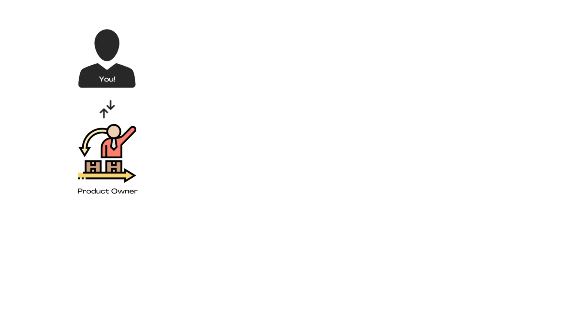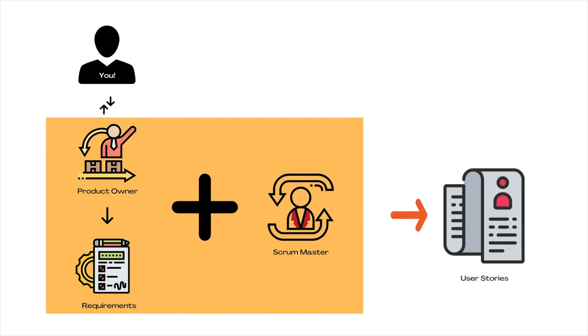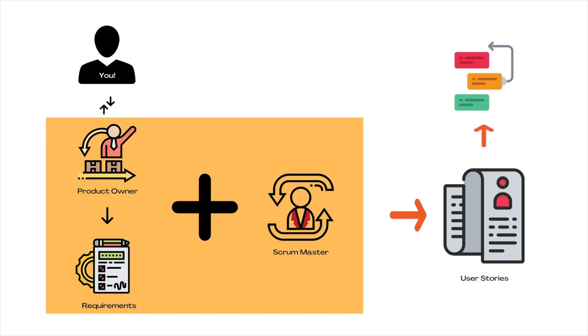The EasySoft product owner talks to the customer — which in this case is you — and gathers all the requirements. With the help of the scrum master, the product owner converts these requirements into user stories, which are then stored in a product backlog. The team then prioritizes and estimates these to create a release plan. After creating the release plan, the three teams select the work they need to complete during a sprint planning meeting.